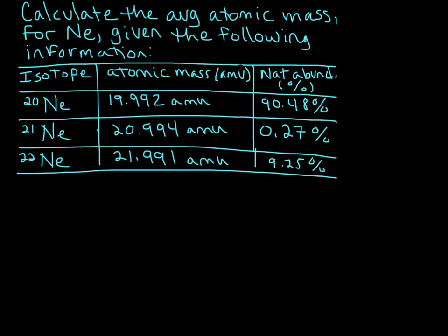Remember what the average atomic mass is - that is a weighted average. We're going to use several pieces of information here. This natural abundance tells us the percent that it's found in nature, and the atomic mass for each of these isotopes.